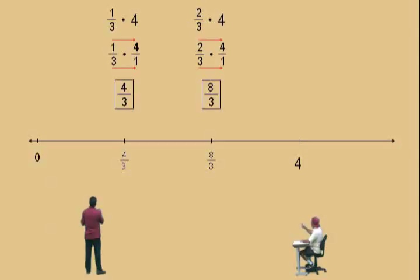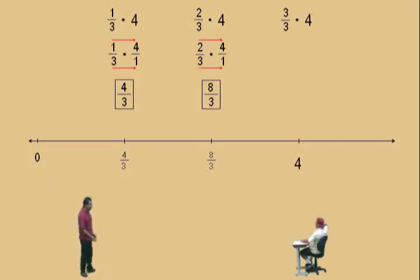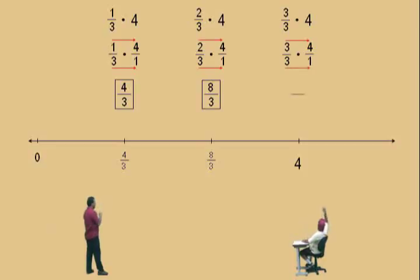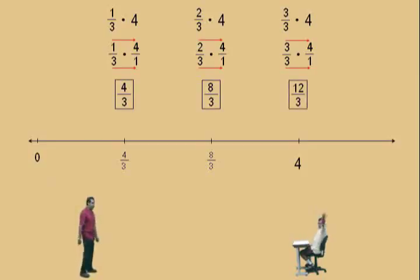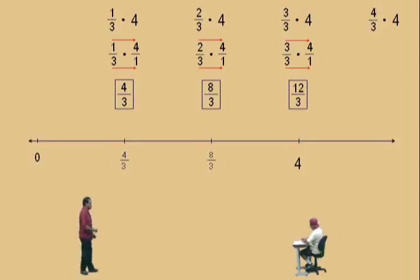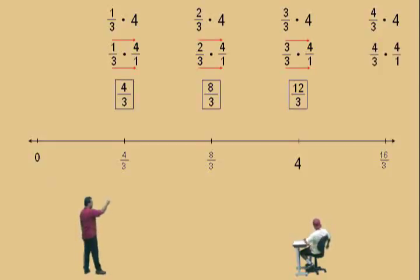Alright Charlie, so 1 third of 4 is 4 thirds, 2 thirds of 4 is 8 thirds. What's 3 thirds of 4? 12 thirds. It should be 12 thirds, because basically 3 thirds times 4 means 1 times 4 — it should be 4, but let's do the arithmetic. Write 4 as a fraction, multiply across the top and across the bottom, and you'll see 3 times 4 is 12, 3 times 1 is 3, and you do get 12 thirds. There's a pattern here. Now Charlie, what's 4 thirds times 4? Based on what we've seen, it should be 16 thirds. Let's do it: 4 thirds times 4 over 1, multiply straight across the top and straight across the bottom, and you do get 16 over 3. It is 16 thirds.